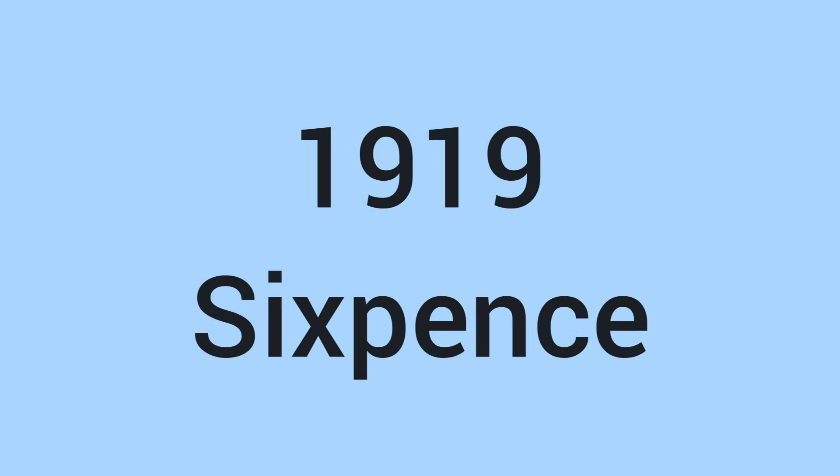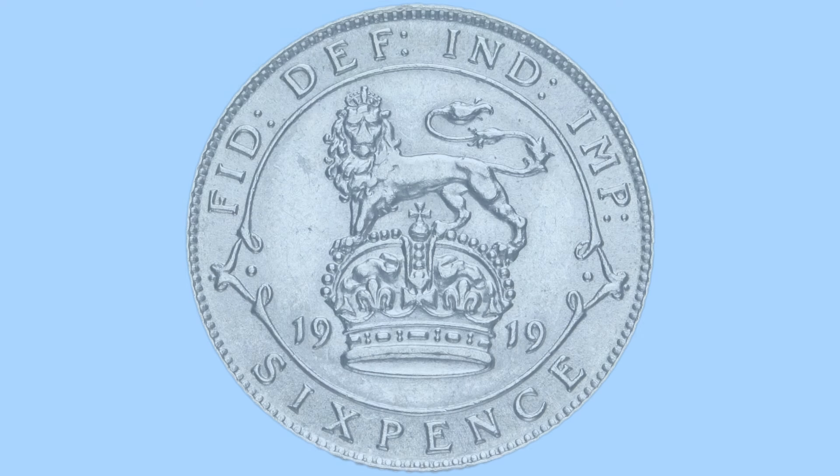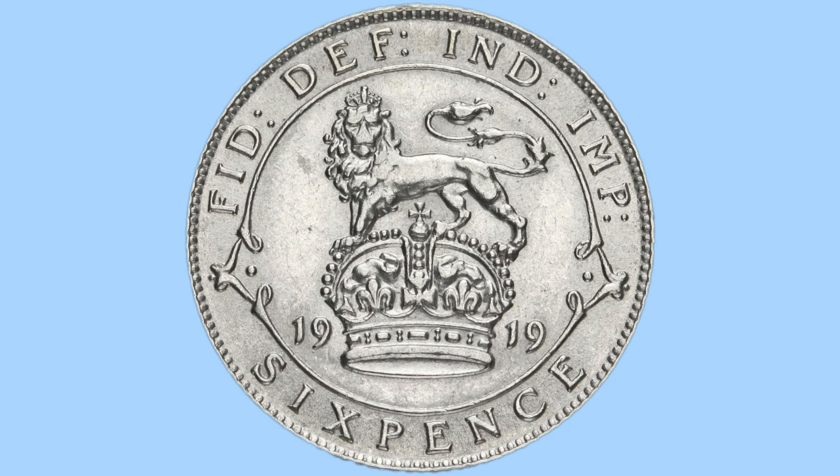Hello and welcome back to Bits and Bobs. Today's video is all about the 1919 sixpence from the reign of King George V, the coin you can see on screen now. I will first go through the design of the coin and then move on to the facts and figures.